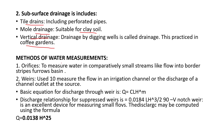The next topic is methods of water measurement. First is orifices, used to measure water in comparatively small streams like flow into border strips, furrows, and check basins. Second is weirs, used to measure flow in an irrigation channel or discharge of a channel outlet. The basic equation for discharge through a weir is Q = ClH³/². The discharge relationship for suppressed weir is 0.0184 × L × H^(3/2). Third is partial flume — a combination of weir and submerged orifice — usable even in relatively shallow channels like irrigation furrows with flat grades.